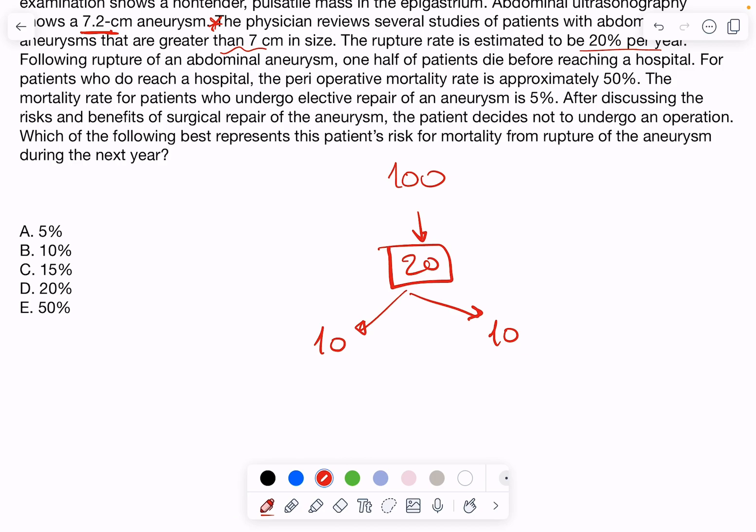Now, when they reach the hospital, some of them, half of them die while in the operation, before doing the operation, after doing the operation. So, the perioperative mortality is 50%. So, half of those who do reach the hospital die.